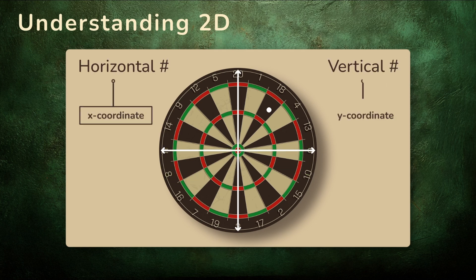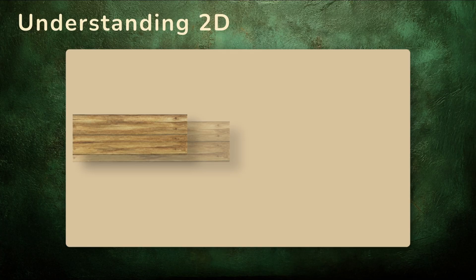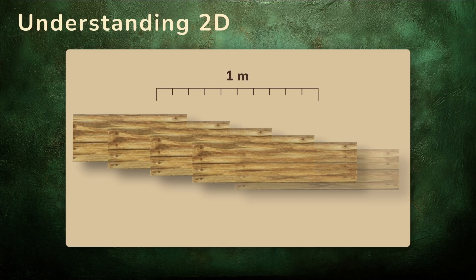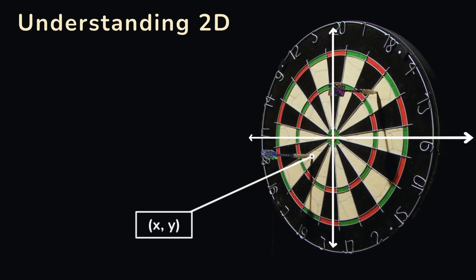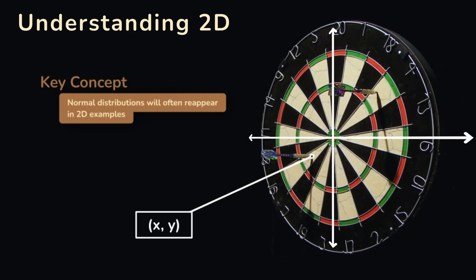That's an x coordinate and a y coordinate for each hit. In the woodcutting example, a single number was enough to describe the variation. For darts, one number is not enough. You need both coordinates to tell the story. When data have two dimensions like this, the normal distribution often shows up again.